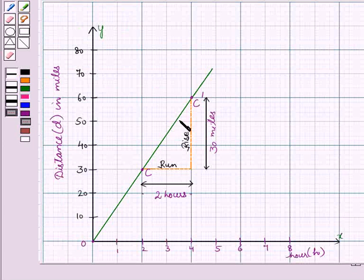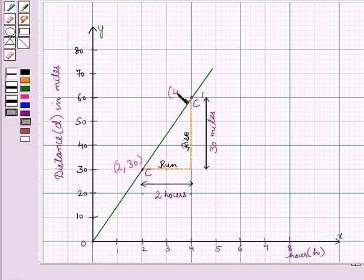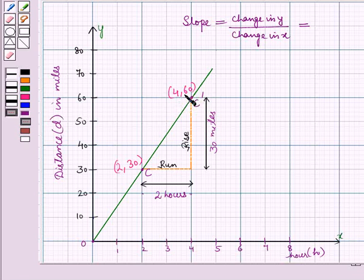Now for car B we can also find the slope using coordinates of C and C dash. Coordinates of C are 2, 30 and coordinates of C dash are 4, 60. So slope equals change in y upon change in x, so this is equal to 60 minus 30 upon 4 minus 2. This equals 30 upon 2 which equals 15.